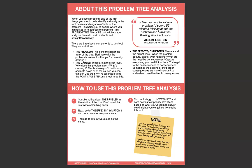Next are the causes, at the root level. Why does this problem exist? What's causing it? This is where you brainstorm and note down all of the causes you can think of. Use the five whys technique from root cause analysis — just keep asking why based on what you have in the trunk, and include all the different ideas that you can come up with.